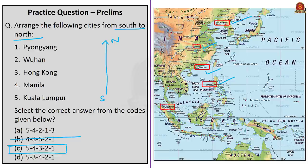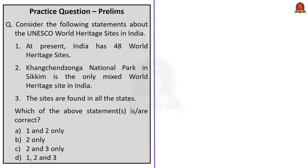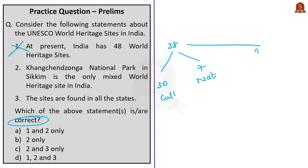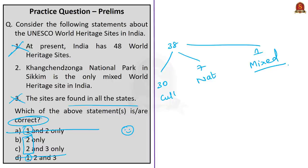The second question is about UNESCO World Heritage Sites in India with three statements. Statement 1 — 'India has 48 World Heritage Sites' — is incorrect because India has 38 sites (30 cultural, 7 natural, 1 mixed). This eliminates options C, A, and D. Statement 2 — 'Kanchenjunga National Park in Sikkim is the only mixed World Heritage Site in India' — is correct. Statement 3 — 'sites are found in all states' — is incorrect, as states such as Andhra Pradesh, Telangana, Chhattisgarh, and Jharkhand currently have none. The correct answer is option B (Statement 2 only).